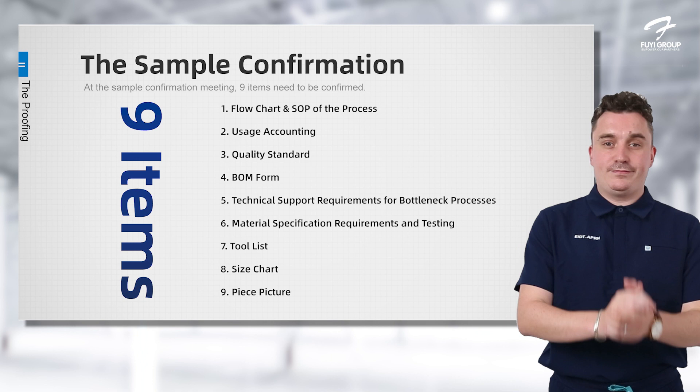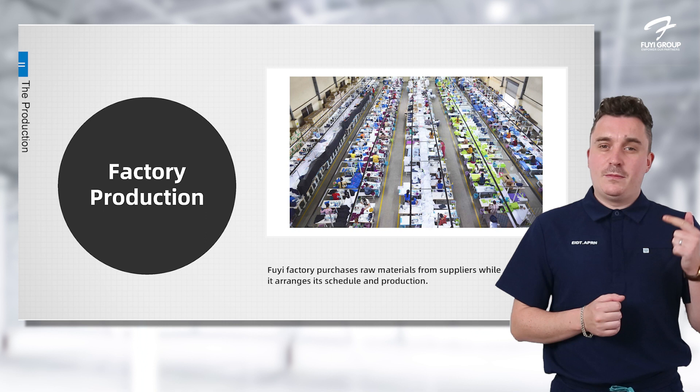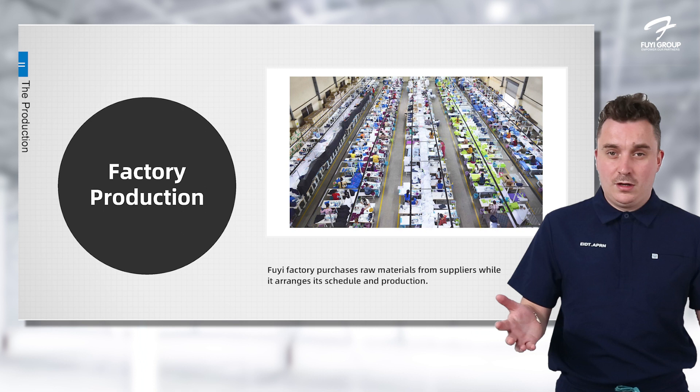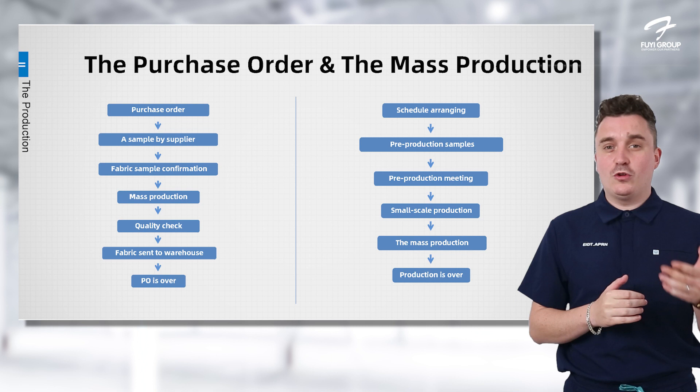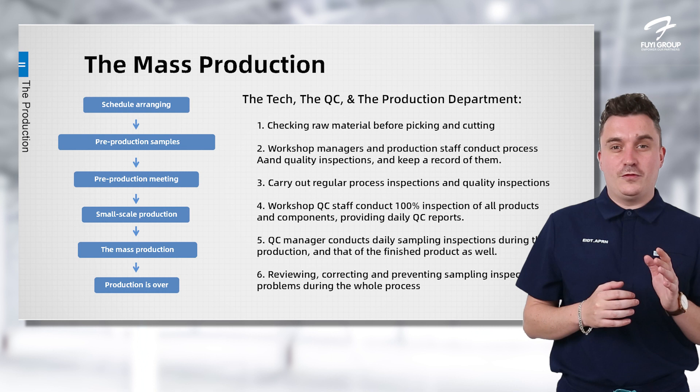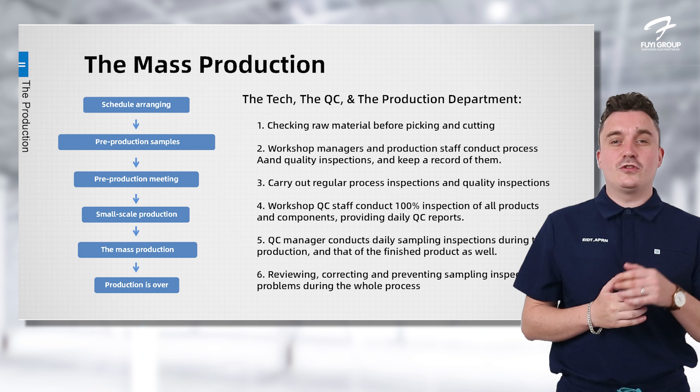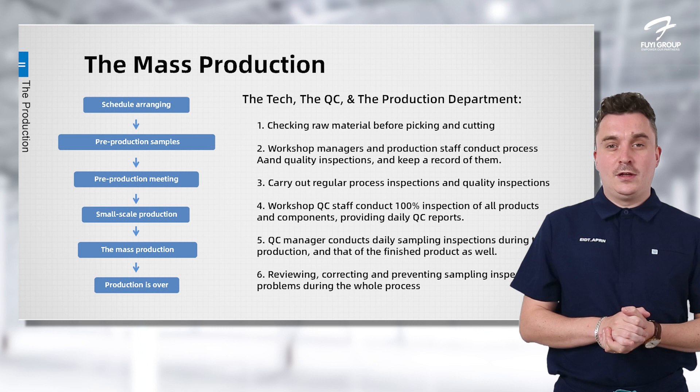Now we move on to our fourth and last step — production, the most important step. We've been through the QC policy, brief analysis, and proofing. Once your sample has been confirmed, you'll send your purchase order to us with all the products, materials, and quantities you need. Once you've entered into mass production for your order, we first do pre-production samples using the same material and quality required for your end product, then send them to you to confirm before starting production.